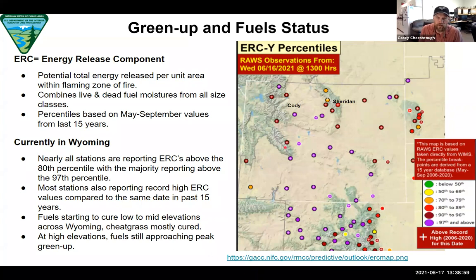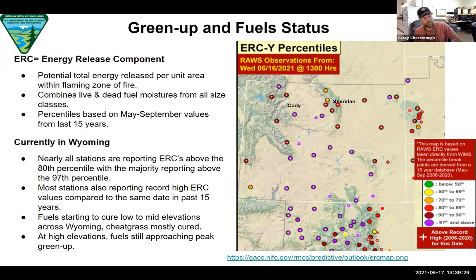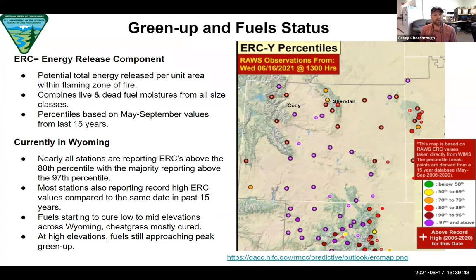It's a pretty dire situation fuels-wise. Northern Colorado is in the same situation, and if you dragged the image south you'd see the same thing all the way down through southern Colorado, Arizona, and New Mexico — and we're starting to see it in Montana too. From a fire operations perspective, that widespread condition probably means we'll see a shortage of firefighting resources sooner rather than later. When that condition is that widespread, that's one of the key challenges we run into.